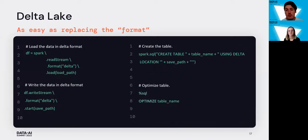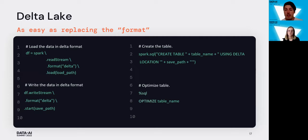In code, it's quite simple. Instead of format Parquet, you just do format delta. You can also do it in a SQL command — for example, CREATE TABLE using delta location and your path. That's actually quite simple.